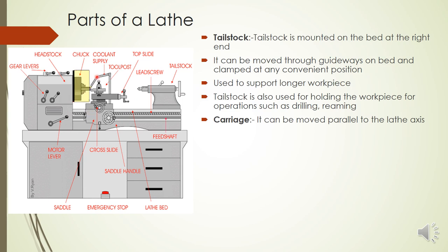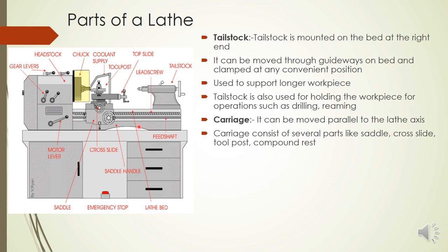The most important central part of the lathe is the carriage. The cutting tool is mounted on the carriage, which can move parallel to the lathe axis. By rotating the hand wheel, you can move the carriage to and fro along the guideways. On the carriage, different small parts are assembled, including the saddle, cross slide, tool post, and compound rest.